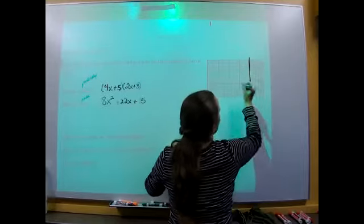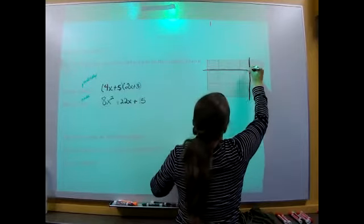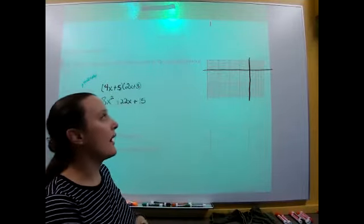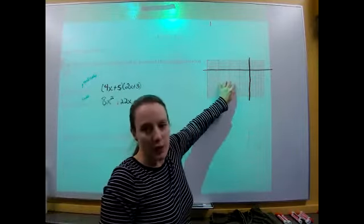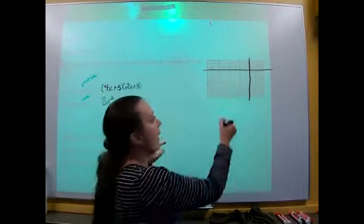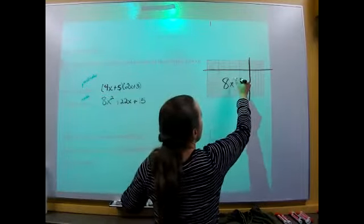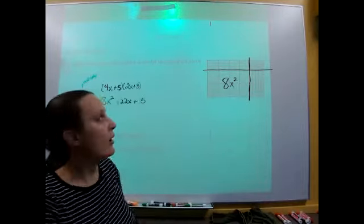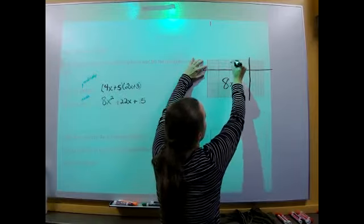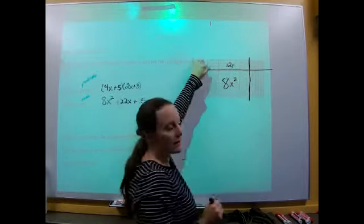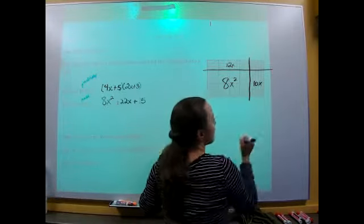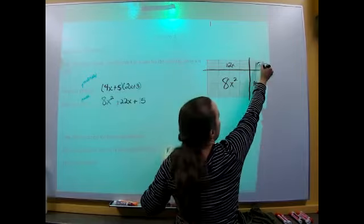I'm going to cut our rectangle into pieces. I'm going to look at my pieces like this. What is in this bottom left corner? I have eight X squared tiles in that bottom corner. Up here I have 12 X's in the top left corner. Here I have 10 X's and up here I have 15 units.